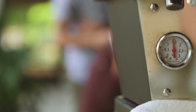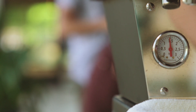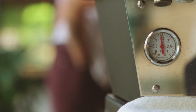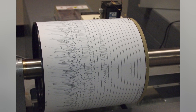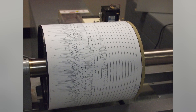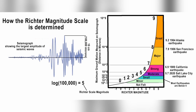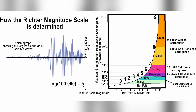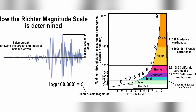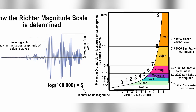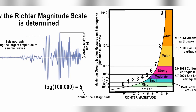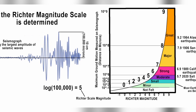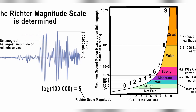Accurate measurement and monitoring of earthquakes are crucial for understanding their characteristics and assessing their potential impact. Scientists use various instruments, including seismometers, to detect and record seismic waves. The Richter scale and the moment magnitude scale (MW) are commonly used to quantify the intensity and magnitude of earthquakes, respectively. These scales provide a standardized way to compare and communicate the power of different seismic events.